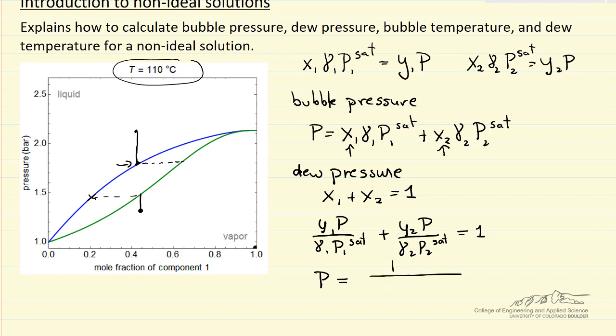By rearranging this equation, I can write the equation for the dew pressure. It's just 1 over y1 over gamma 1 p1 sat plus y2 over gamma 2 p2 sat.